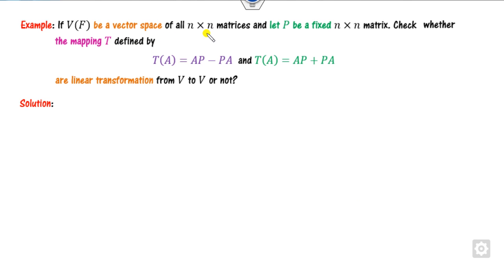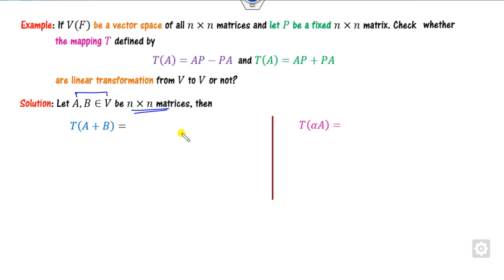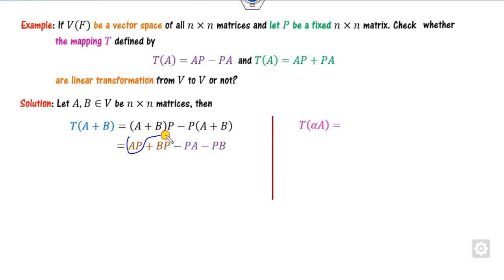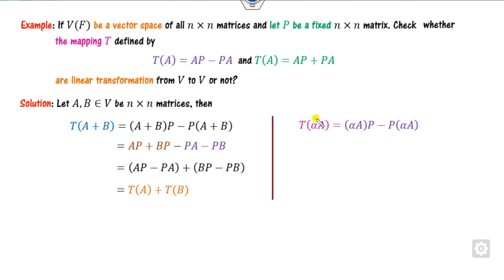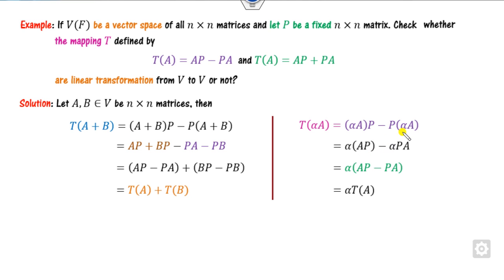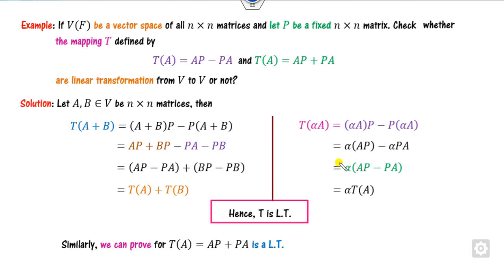Consider the vector space consisting of matrices. We have to prove whether the given transformations are linear. Consider two N×N matrices A and B. For the first property, T(A + B) = (A+B)P − P(A+B), where P is fixed. Opening this gives AP − PA plus BP − PB, which equals T(A) plus T(B). For the second property, T(alpha A) = alpha(AP − PA) = alpha times T(A). Both properties are satisfied, so this is a linear transformation.